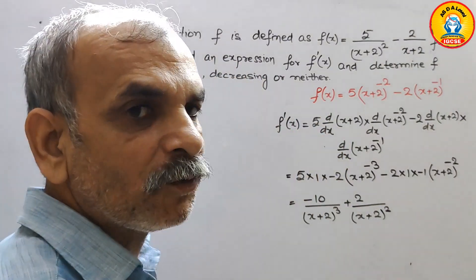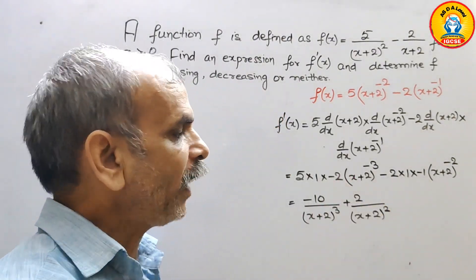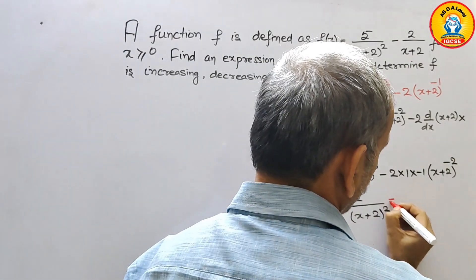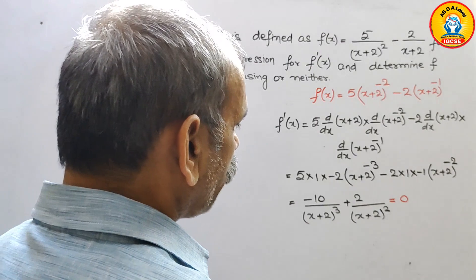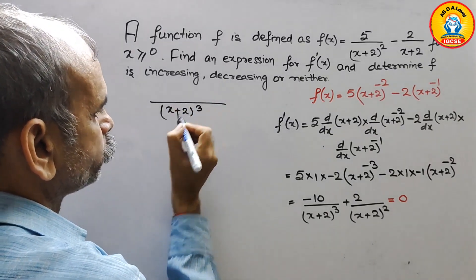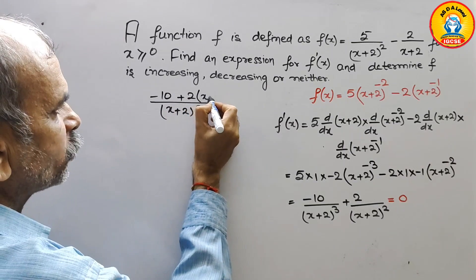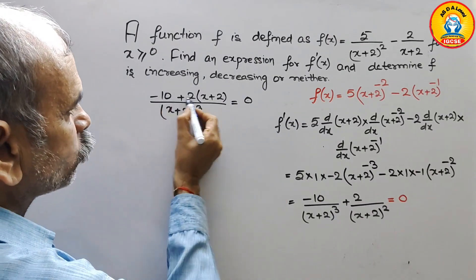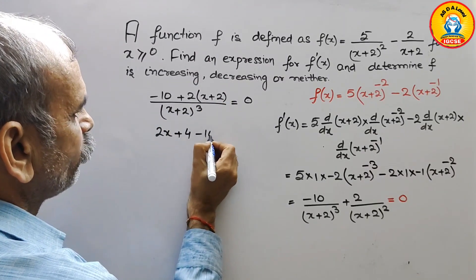So this is the differentiation. They have told x is greater than or equal to 0. We have to find the factors by taking this equal to 0. Taking the LCM, which is (x+2)³, the numerator becomes minus 10 plus 2 times (x+2) equals 0. Cross-multiplying, we solve 2x + 4 minus 10 equals 0, giving 2x minus 6 equals 0.